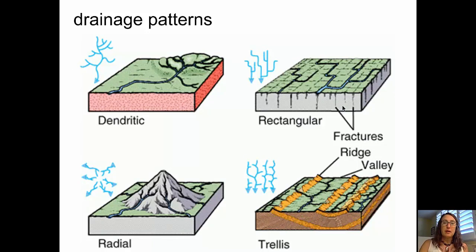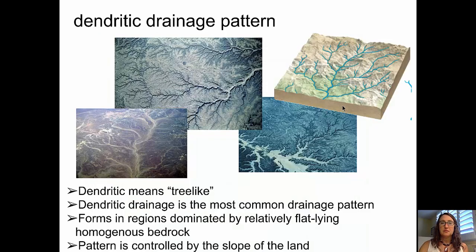Moving now to drainage patterns — we have four main types: dendritic, rectangular, trellis, and radial. Dendritic drainage patterns are the most common patterns of stream systems. They form in a shape that is tree-like or branching. Dendritic patterns tend to form in regions dominated by relatively flat-lying, homogenous bedrock, where the slope of the land controls the drainage pattern. In this picture, you can see a cartoon and three images showing river systems with dendritic drainage patterns.